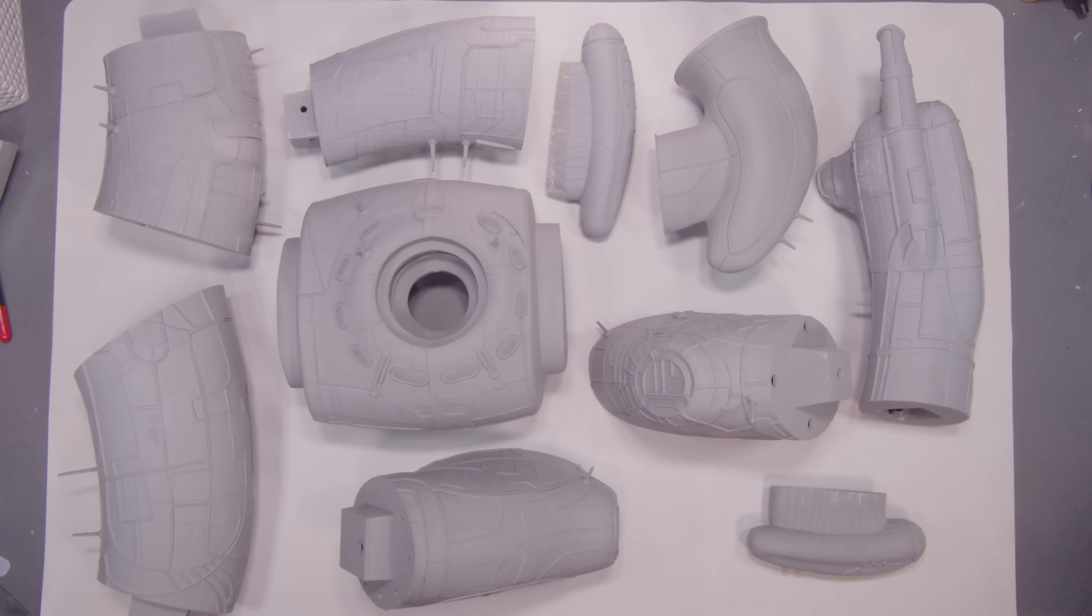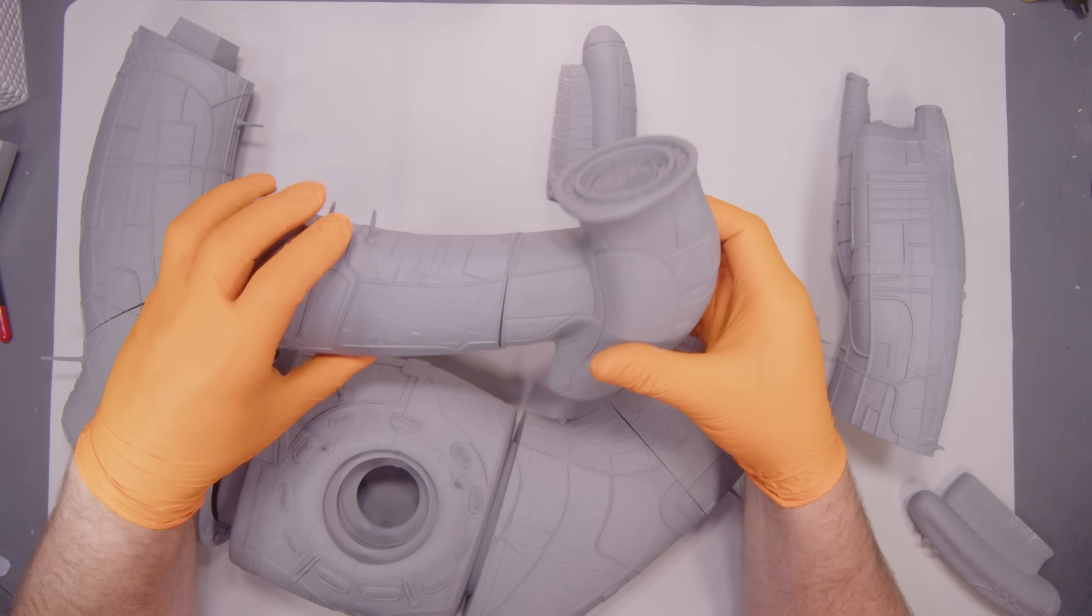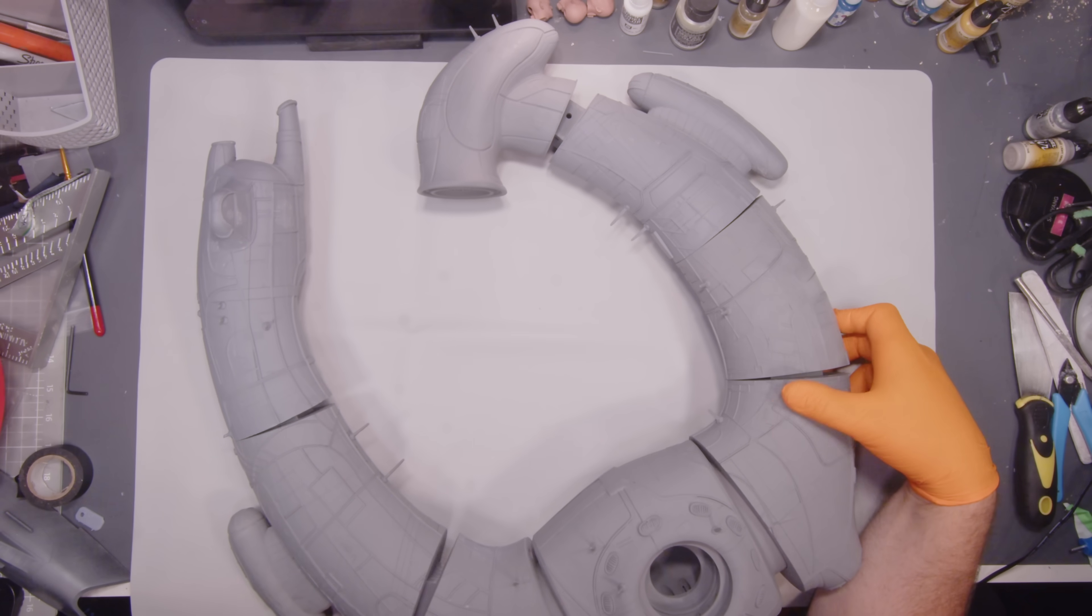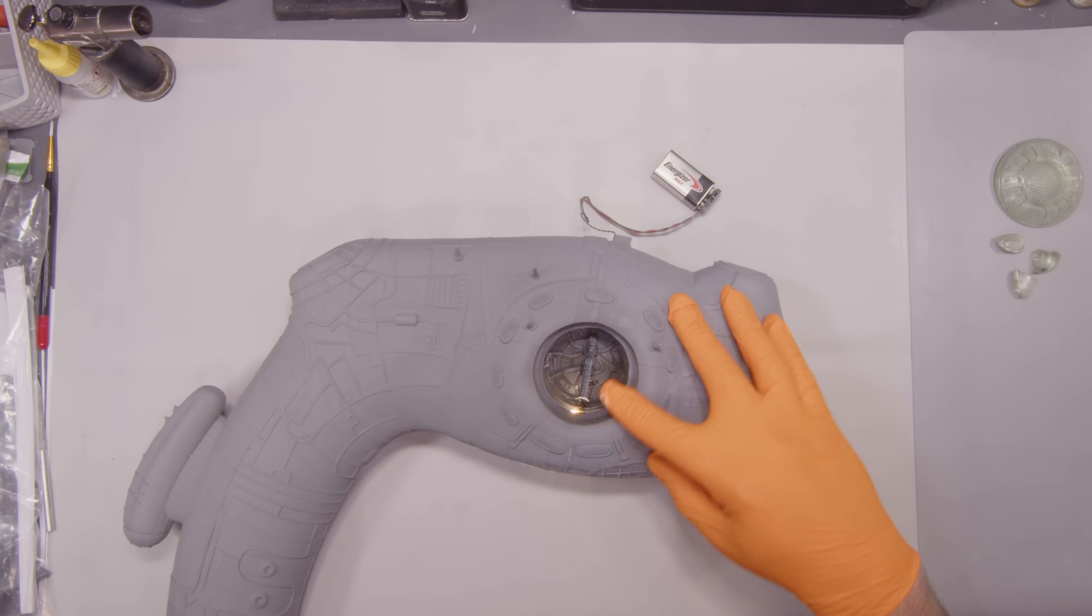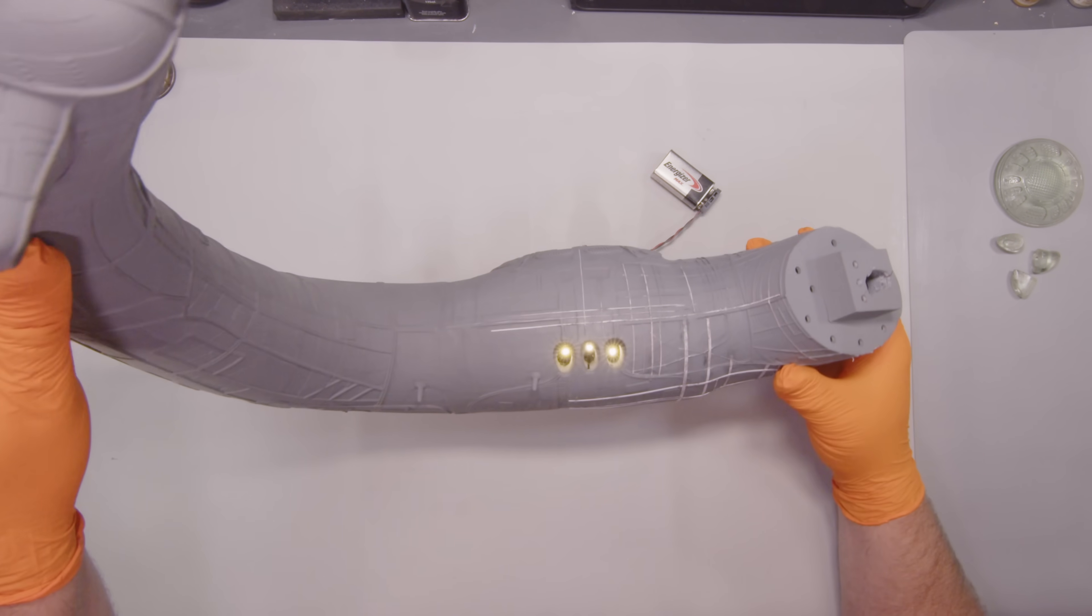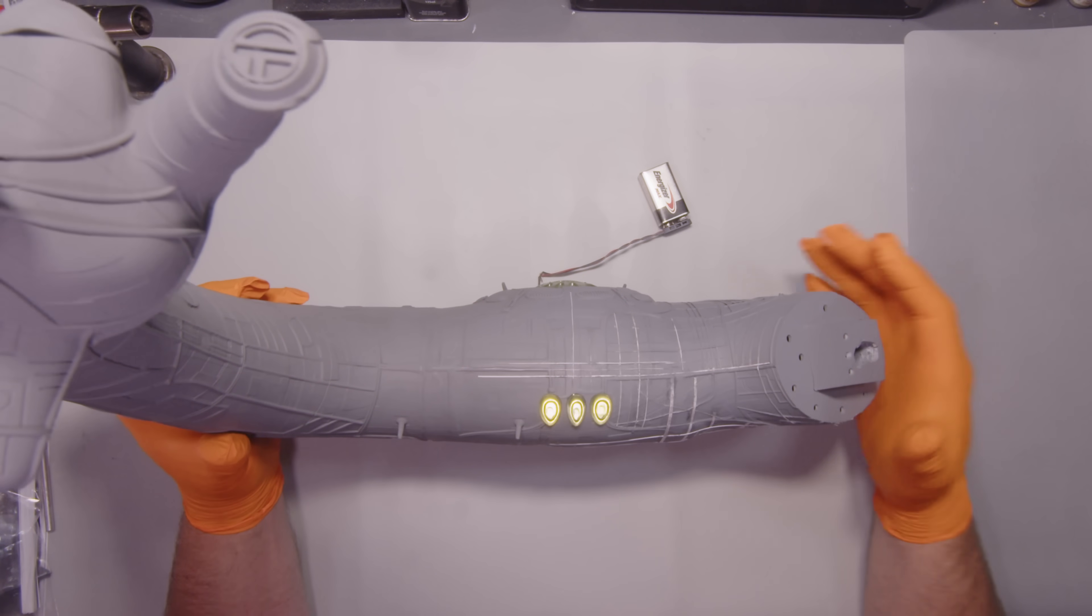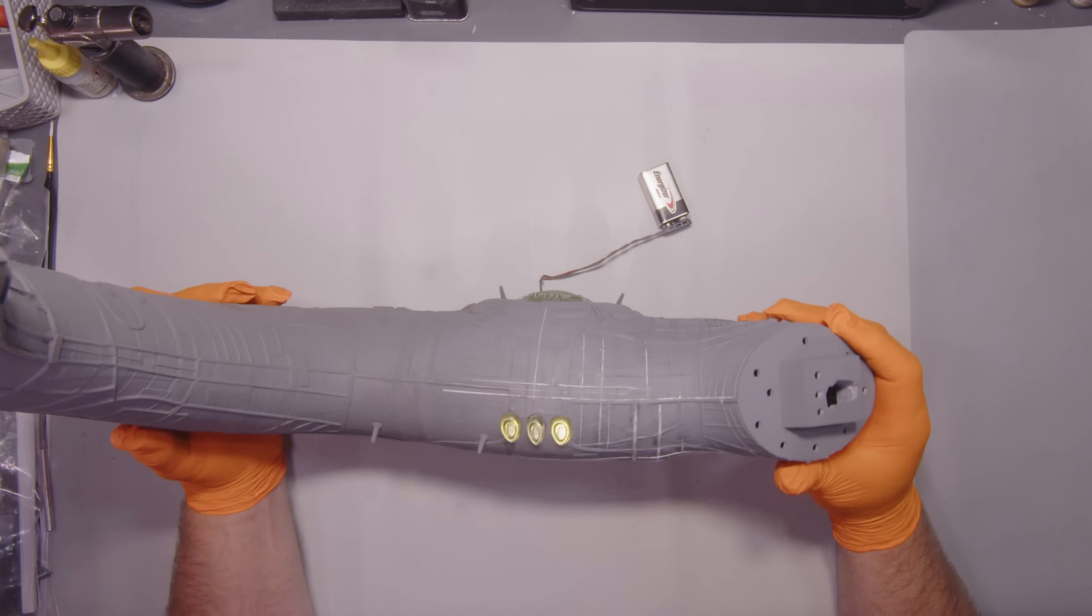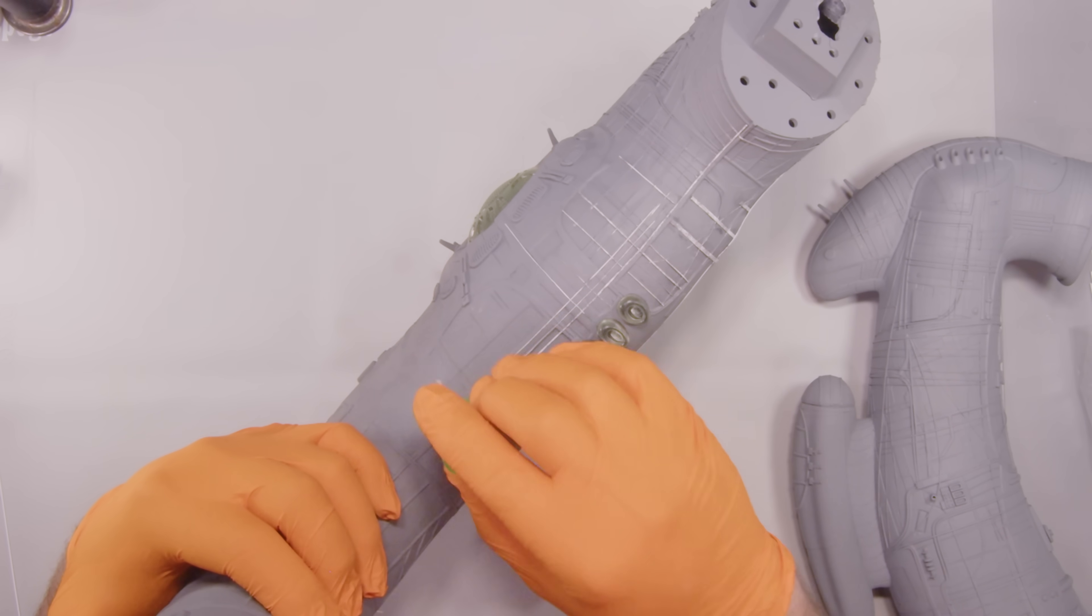So we have now printed all of our parts. Now it's time to test fit the component pieces and figure out how best to join them together. Before joining the parts, I rigged some simple LED lighting to the cockpit and window sections of the ship. A small hole was made at the rear of the ship to allow a thin cable to provide external power to the LEDs.